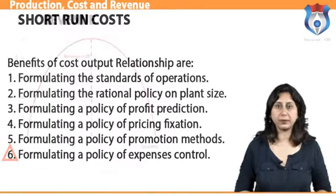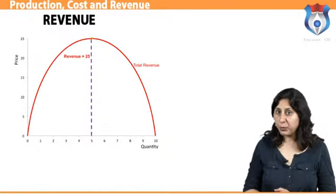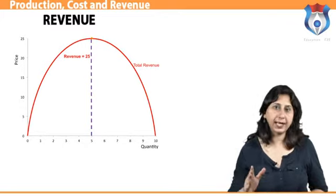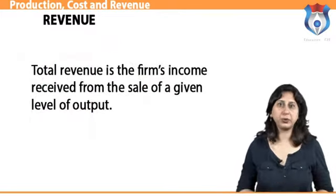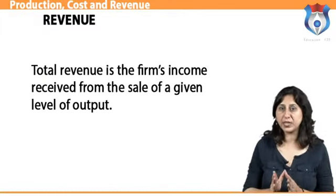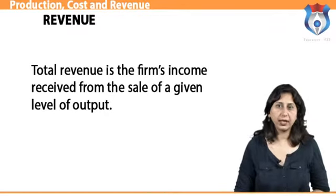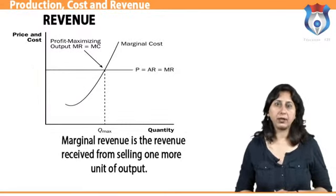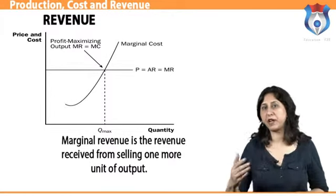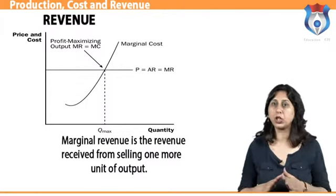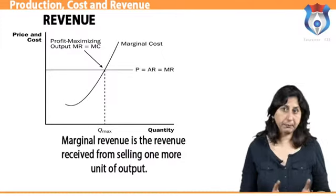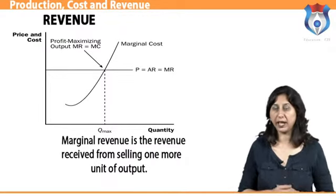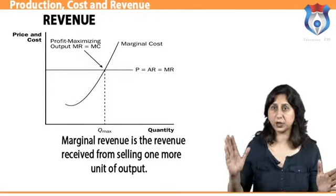After studying cost, the next most important component is revenue. Revenue is a measure of how much money a company has brought in within a given period. Total revenue is the firm's income received from the sale of a given level of output, calculated as the price of the good multiplied by the quantity sold. Marginal revenue (MR) is the revenue received from selling one more unit of output. In a competitive market, where the firm's decision to sell will not impact the price, the marginal revenue equals the per-unit price of the output, i.e., MR = P.